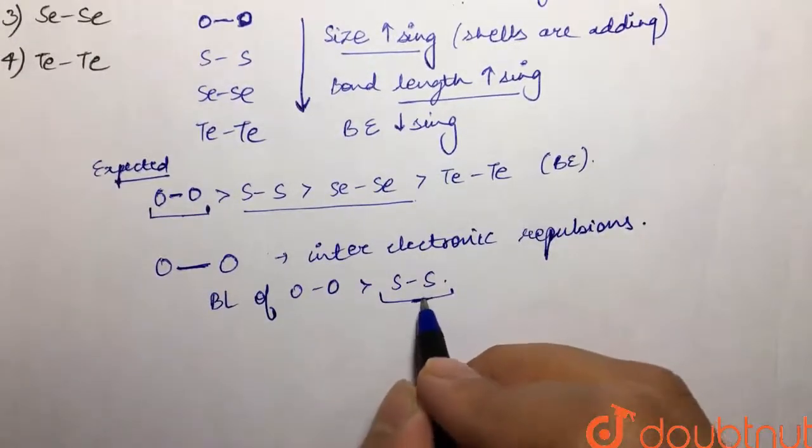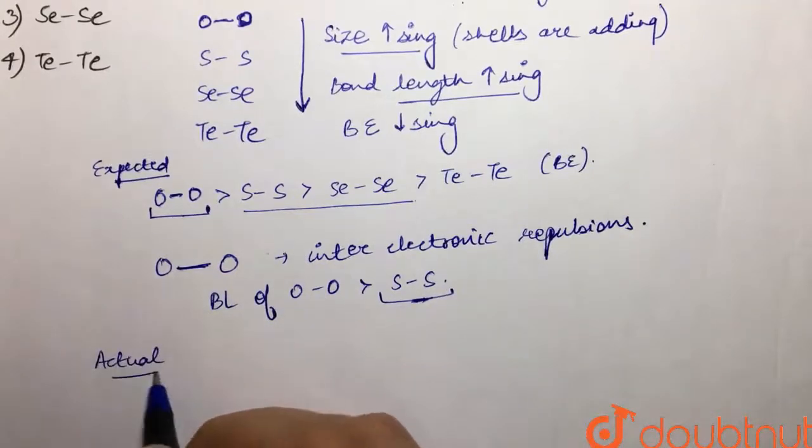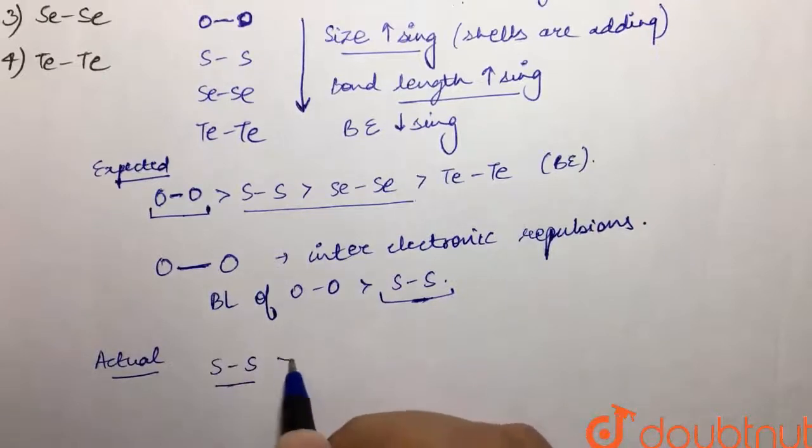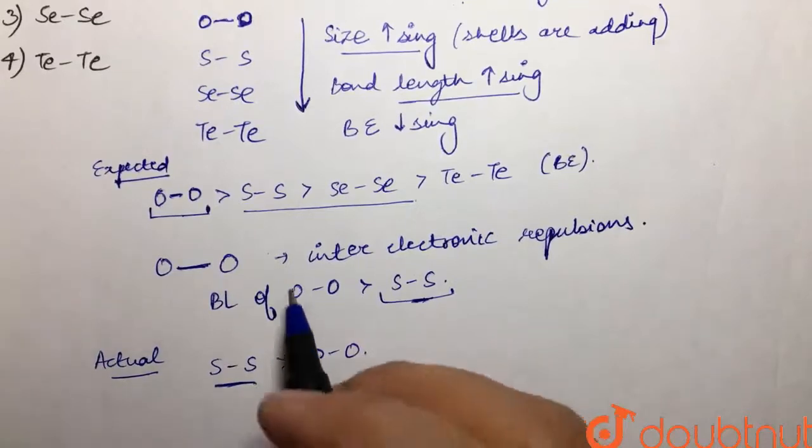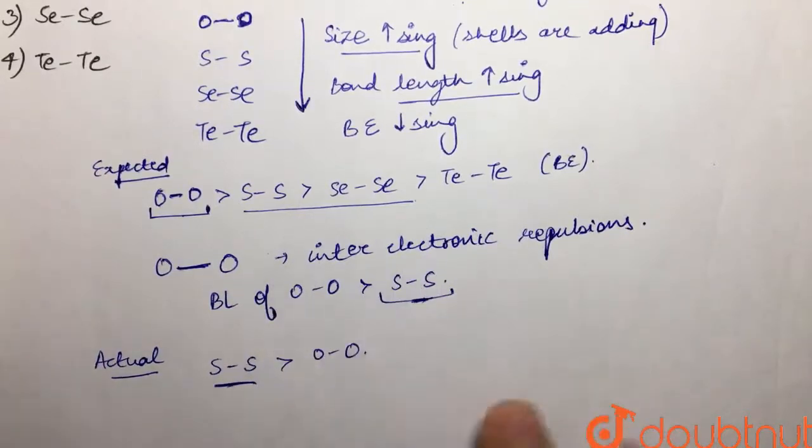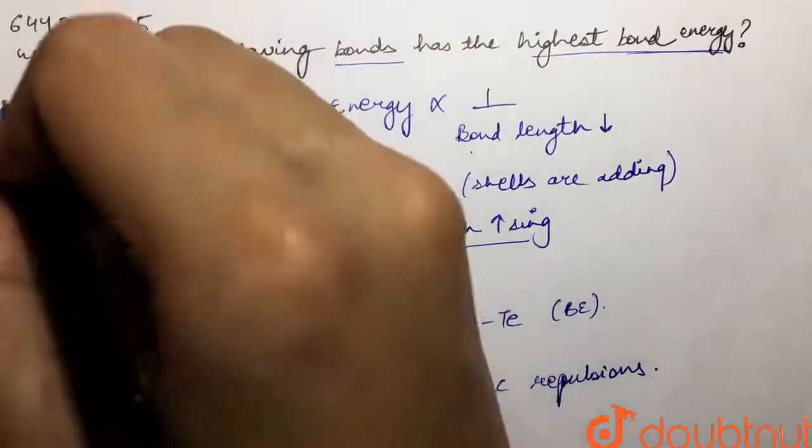and hence its bond energy would be maximum. So our actual order of bond energy is that sulfur-sulfur has greater bond energy than oxygen-oxygen, and in fact it has the highest bond energy amongst all of these. So our answer is sulfur-sulfur, that is given in option number one. So our answer is first.